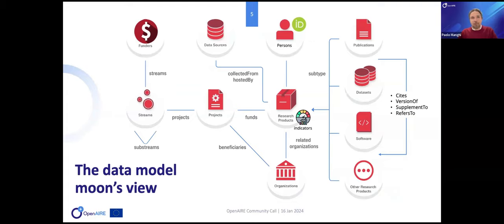This is the model. As you can see, we have products which contain indicators. Products are publications, data, software, and other products that cannot be classified in one of the three. There can be many relationships between these products — from citations, versions, supplements, etc. We have persons related to products mainly as authorships represented with ORCID identifiers. And then we have organizations, projects, sources, and funders connected with the projects.